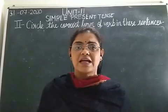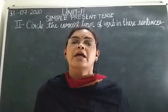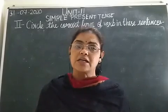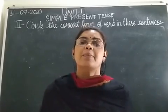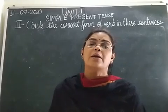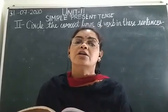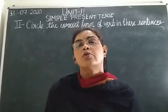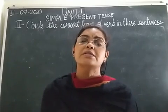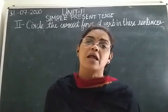Eighth one: he sells things online. In this sentence we need to circle 'sells' — S-E-L-L-S. Why? Because our subject is singular, so we need to add S to the root form of the verb. Please circle S-E-L-L-S.